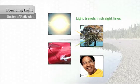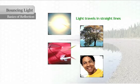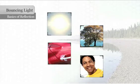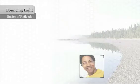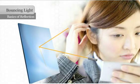Remember that light travels in straight lines. Light will not change direction on its own. When light reflects off the surface of an object, the direction that the light bounces depends on the surface of that object. When you look into a mirror, you can see a clear reflection because the surface is very smooth. This is called a regular reflection.